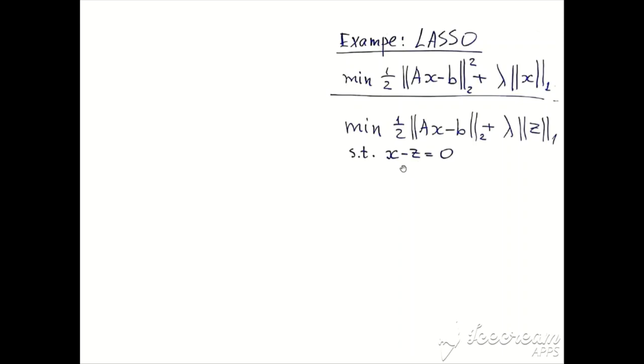Now we will demonstrate use of ADMM for solution of the LASSO problem: finding a linear least squares solution which achieves sparsity, as small as possible number of non-zeros. Usually it is achieved by adding an L1 penalty term to the least squares objective. In order to use ADMM, we will introduce an artificial variable Z and have the constraint Z equals X. Instead of the norm one of X, we will put norm one of Z.